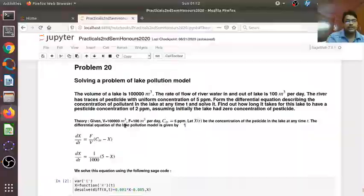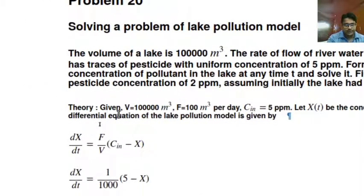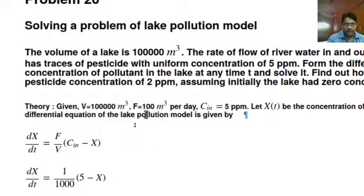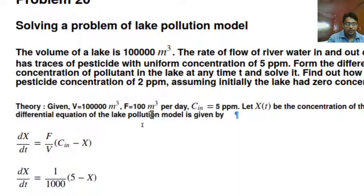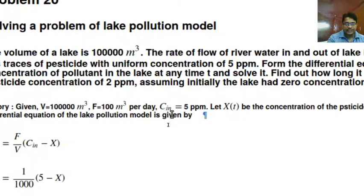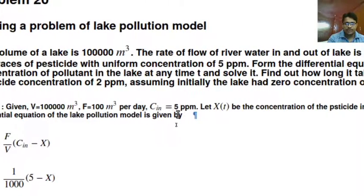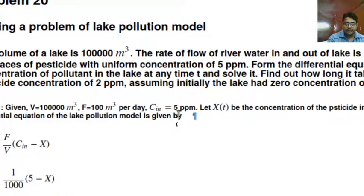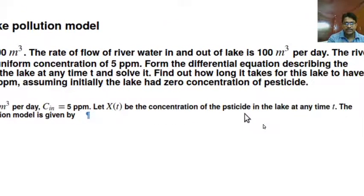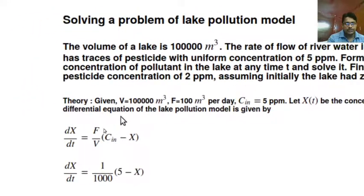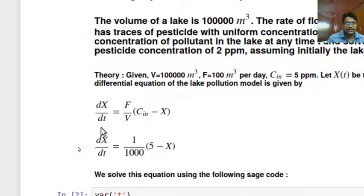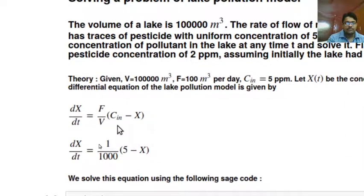In the theory portion you can write: given V equal to 1 lakh meter cube, F equal to 100 meter cube per day. These are the notations that I have used, which was used in class also. F is the rate of flow of the water in and out of the lake. And C_in means the concentration of the pollutant that is coming inside the lake, which is 5 parts per million. Let X(t) be the concentration of the pesticide in the lake at any time t. Then the differential equation of the lake pollution model is given by: dX/dt equal to F/V multiplied with (C_in minus X).